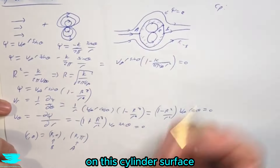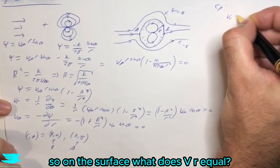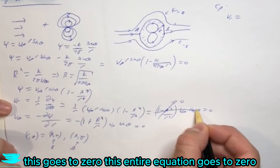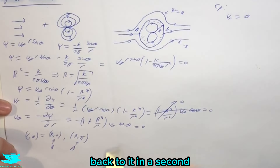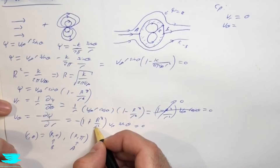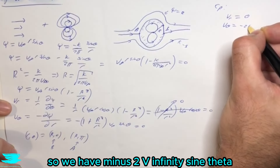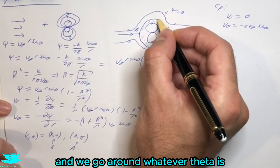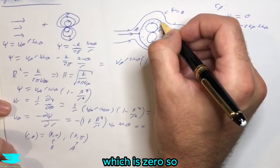On the cylinder surface, r = R. Substituting into the vr equation, the term (1 − R²/r²) becomes zero, so vr = 0 everywhere on the surface. For vθ on the surface, r = R gives (1 + R²/r²) = 2, so vθ = −2 · v∞ · sinθ. Starting at θ = 0 and going around, we can plug any θ into this equation to find the velocity at any point on the surface. We now know both velocity components on the cylinder: vr = 0 and vθ = −2v∞ sinθ.